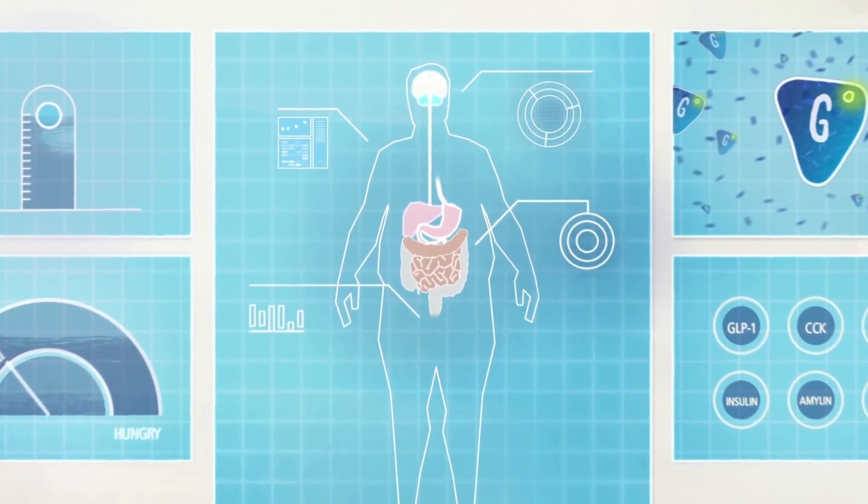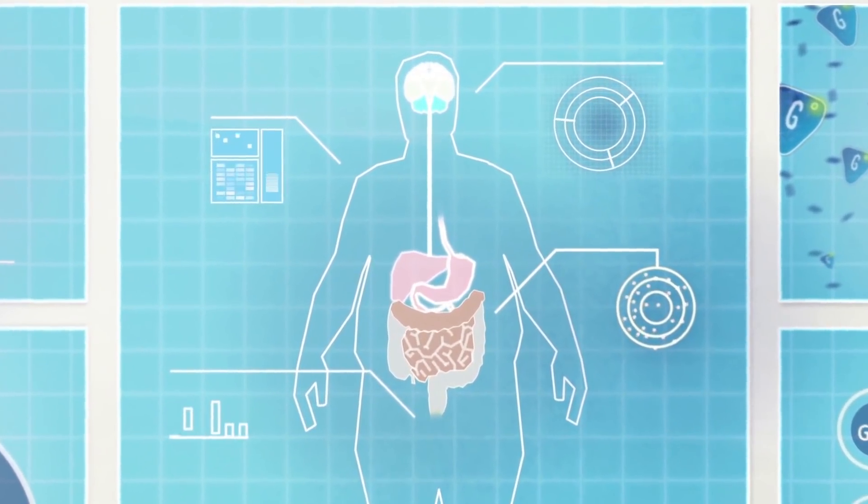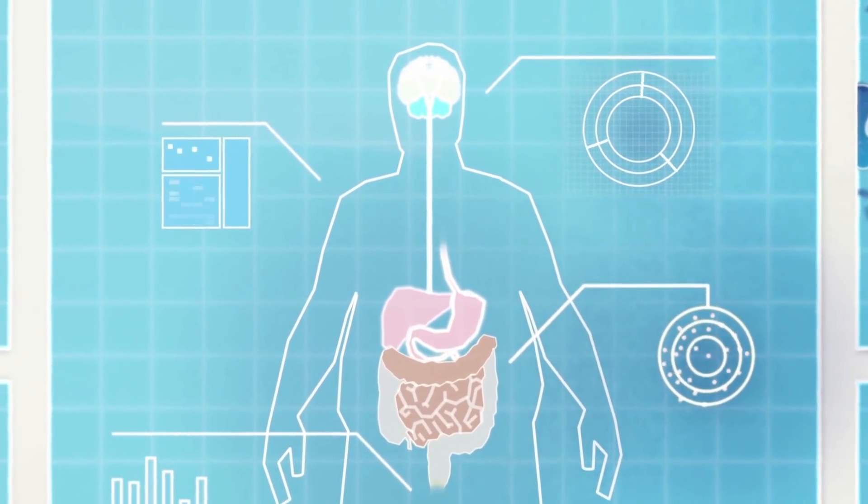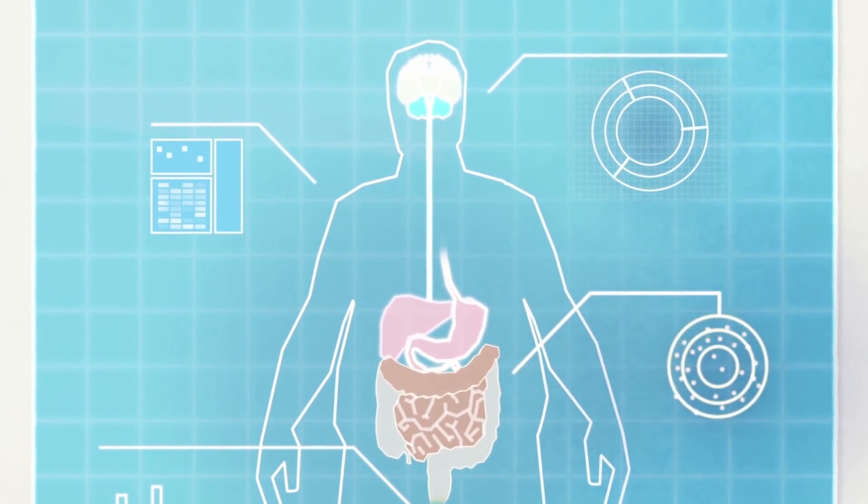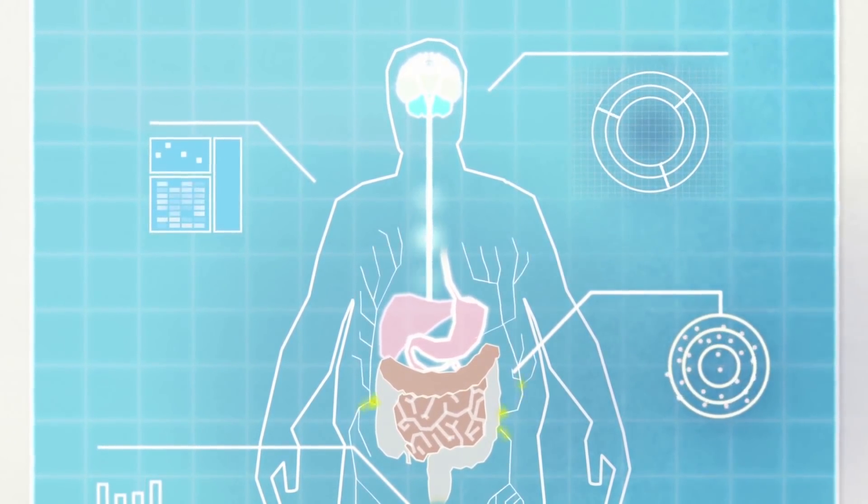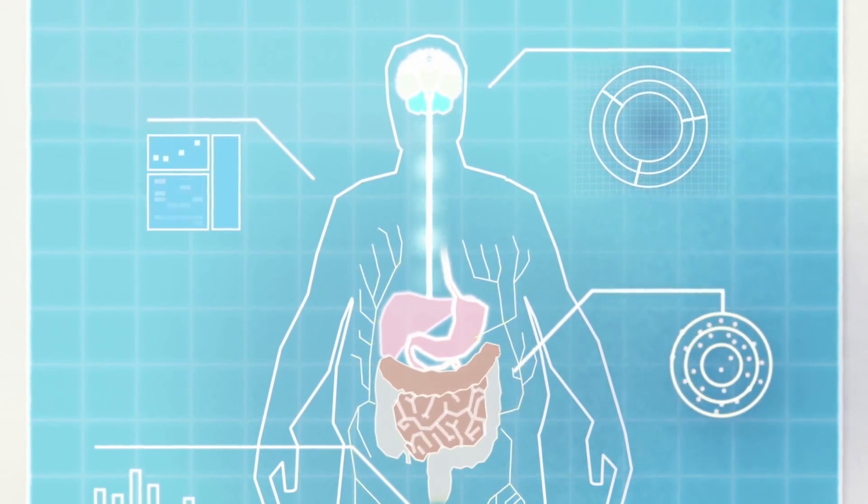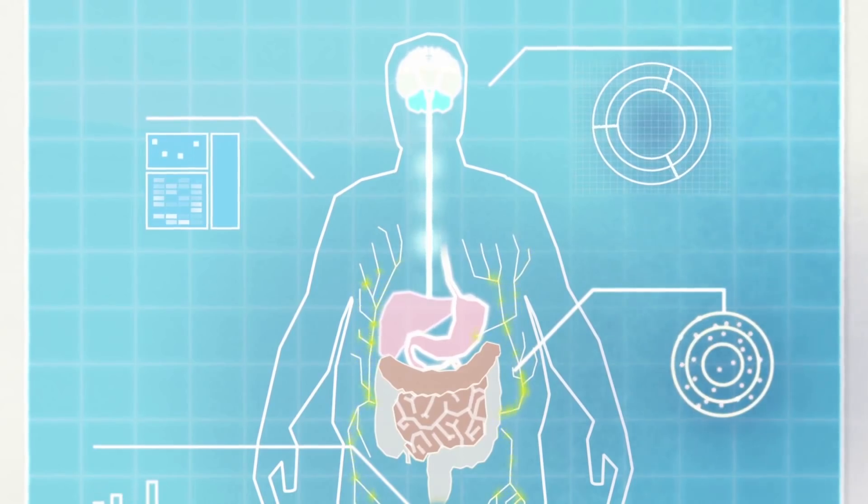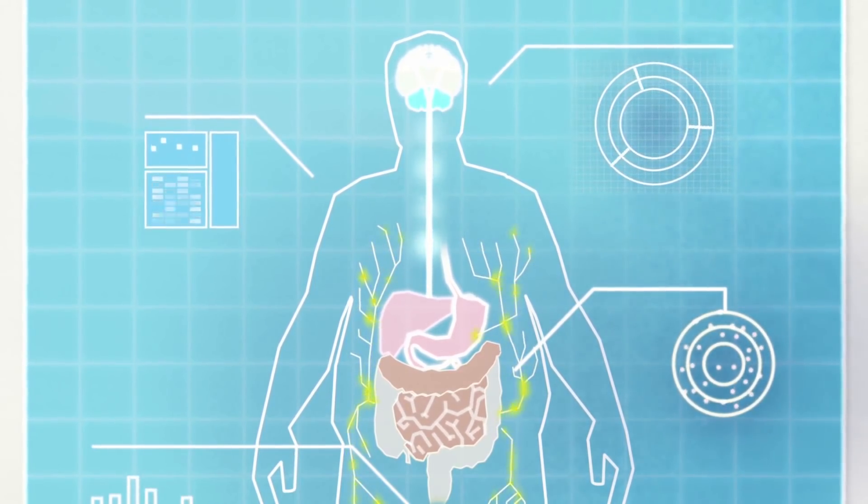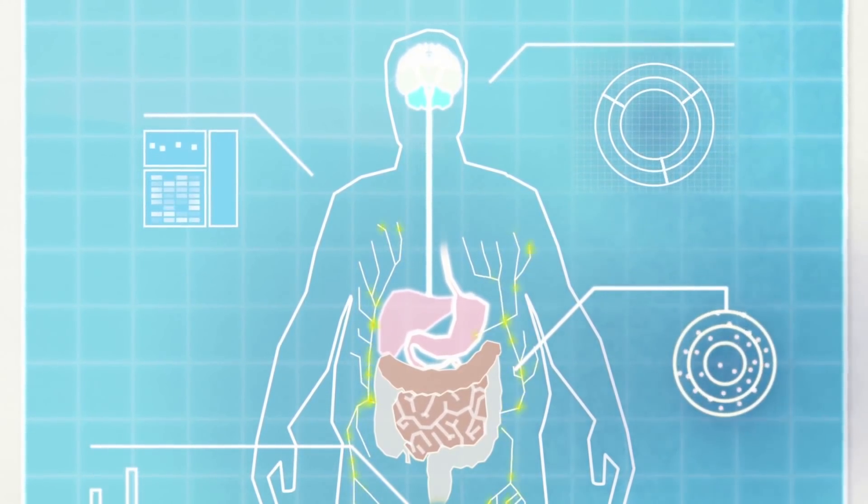And then, there's the body's homeostatic system, which controls appetite, energy intake and energy expenditure. It involves several areas of the brain, including the hypothalamus, which processes hormonal and neuronal signals from other brain structures, the gastrointestinal tract, and adipose tissue.